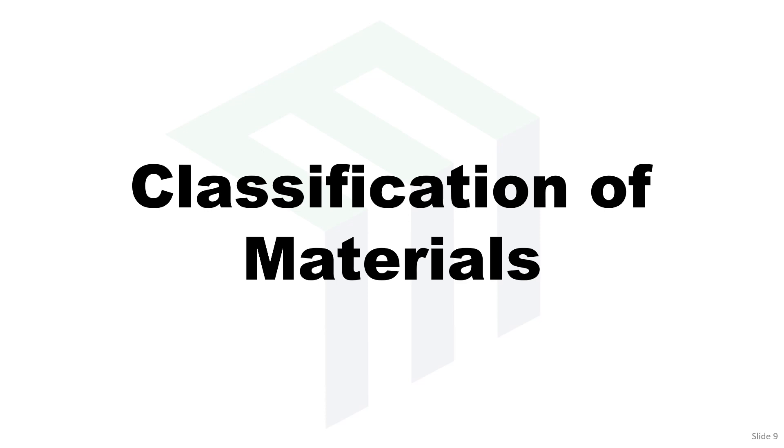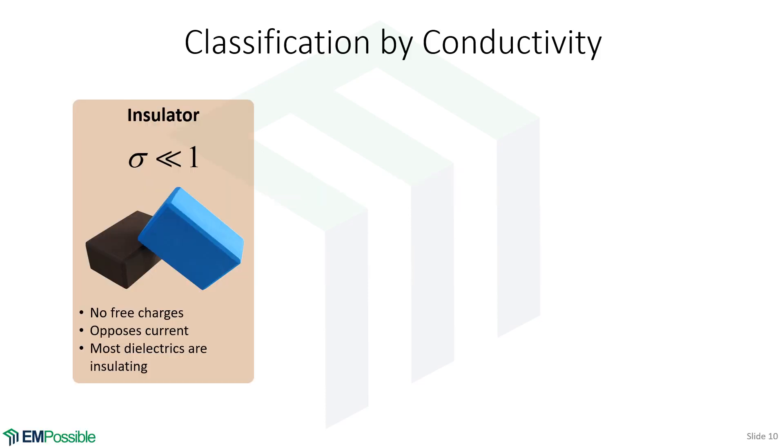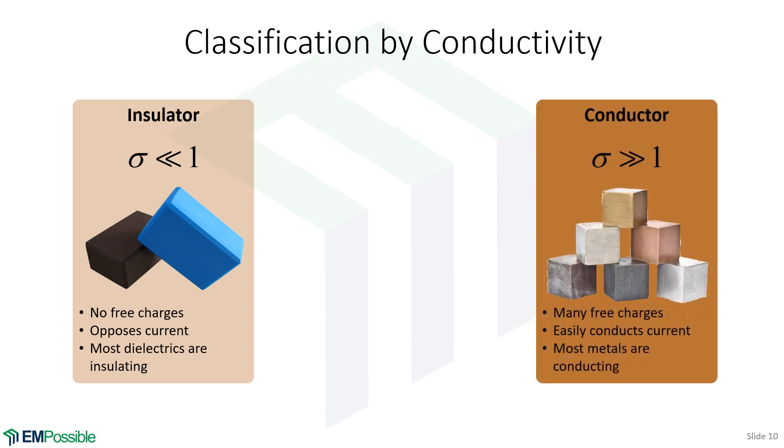Classification of materials. We can classify materials by their conductivity. If the conductivity is very, very small, we call these insulators, or very often we'll just call them dielectrics. There's no free charges. All the electrons are bound to the nucleus. And so they resist. So they oppose current. Most dielectrics that we work with, they're insulating.